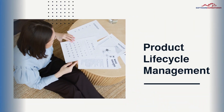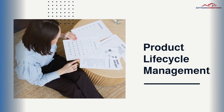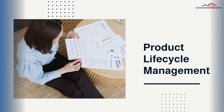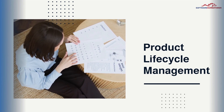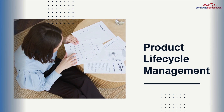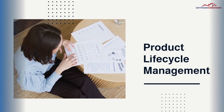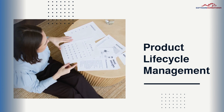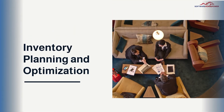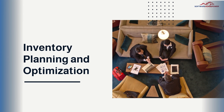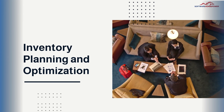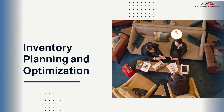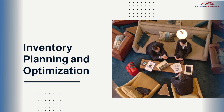Product Lifecycle Management: Streamline moving product concepts to market and drive smart assortment plans and allocation strategy. Inventory Planning and Optimization: Save money on excess inventory and put the right levels of stock at the right places to balance supply and demand.